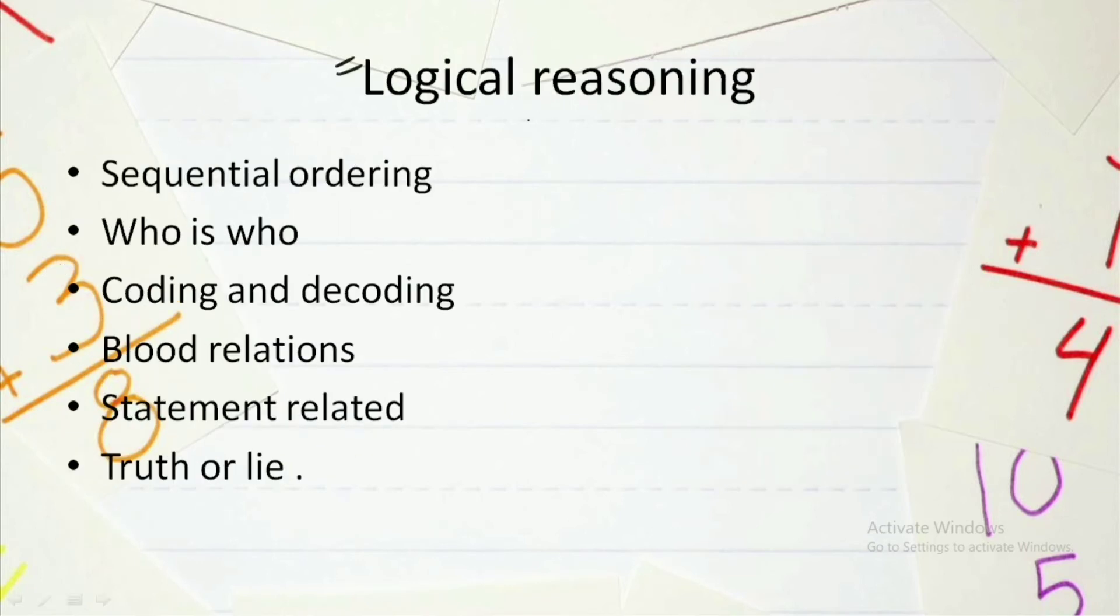Then we have the questions from logical reasoning. In logical reasoning we mainly have questions from sequential ordering. The next one is who is who. This is a very important topic. Then we have coding and decoding in which some codes are given and we need to decode them. It is also very easy and very important.